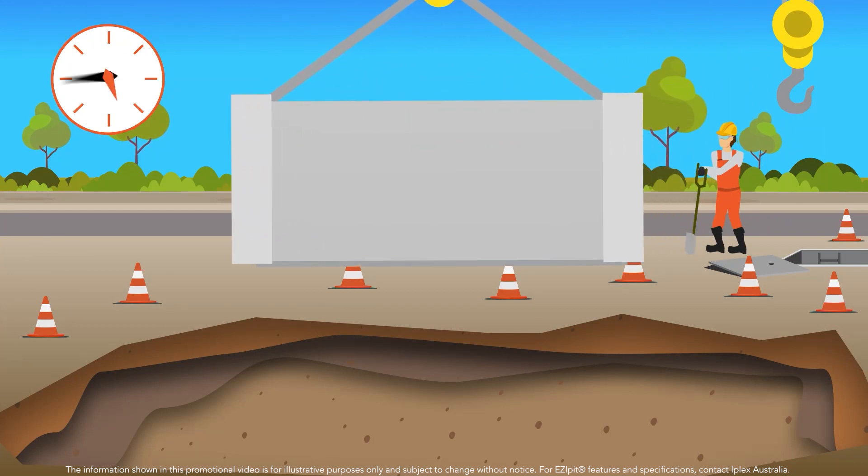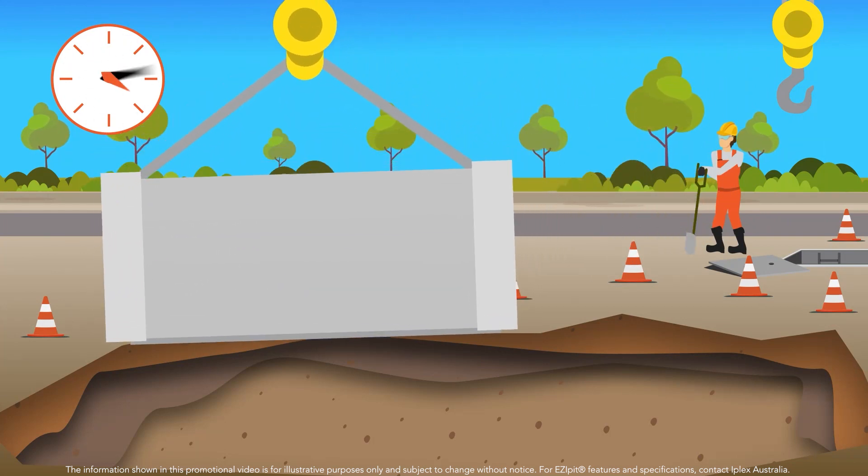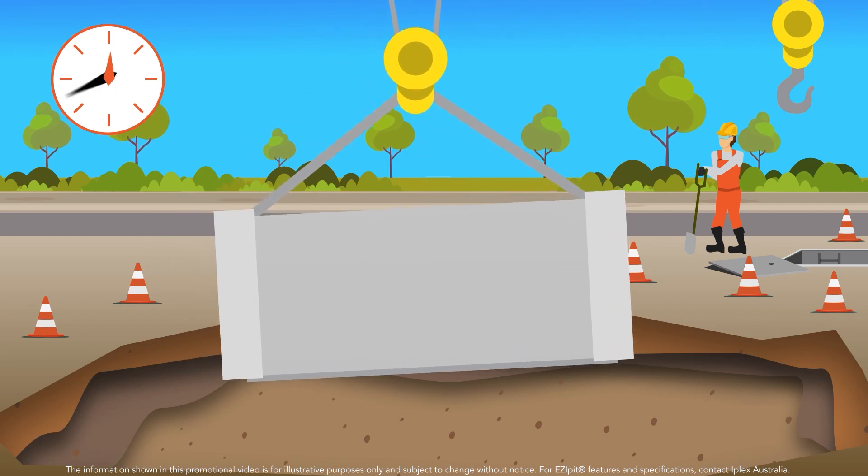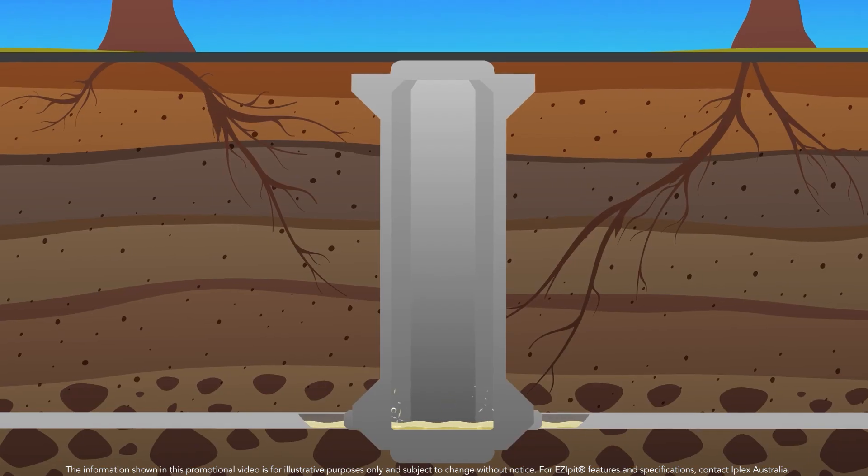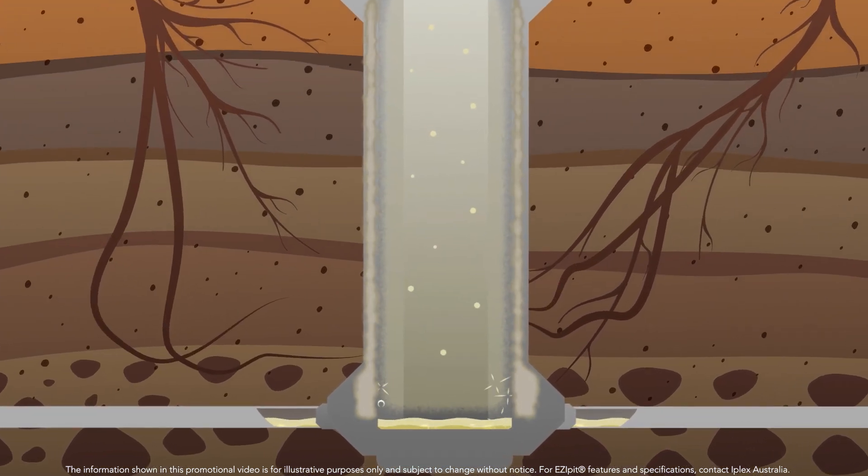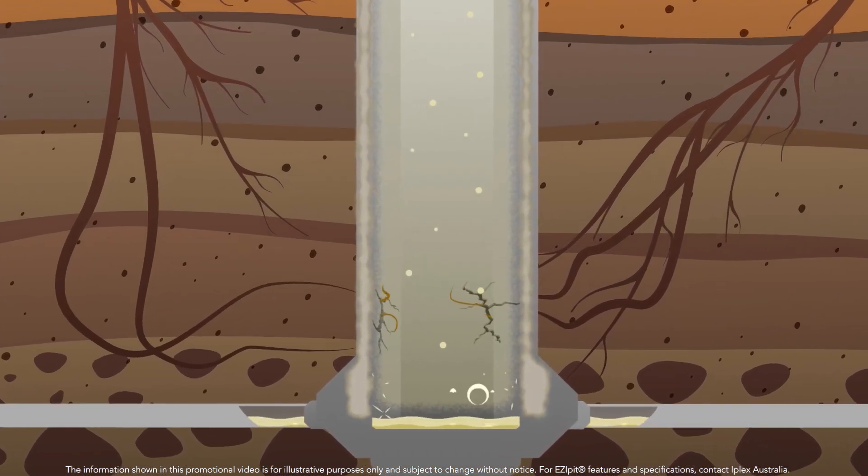Conventional maintenance holes can be heavy to lift and have been known to fail due to corrosion and ground movement. Tree root intrusion is also a common cause of failure in sewerage systems, leading to unplanned and expensive relining and maintenance programs.